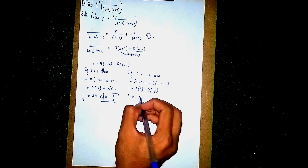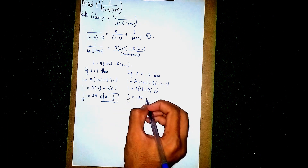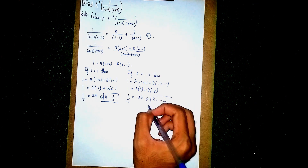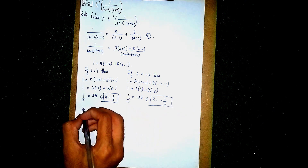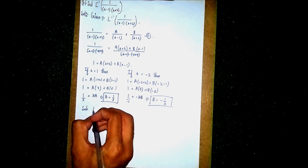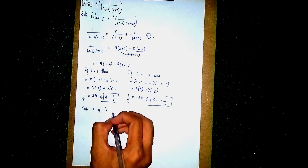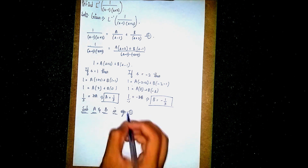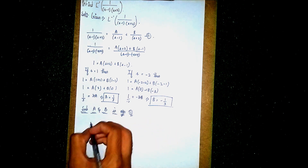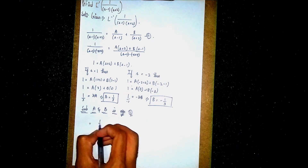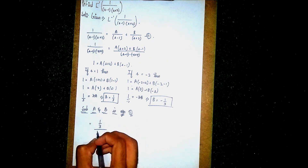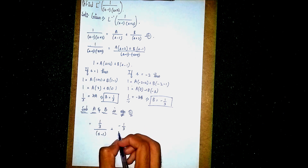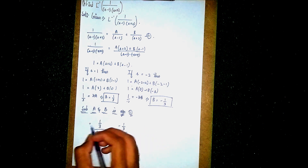This gives 1 equal to minus 3B. Sending minus 3 to the other side, B is equal to minus 1 by 3. Now substitute the values of A and B back into equation 1. The expression becomes (1/3) by (s minus 1) plus (minus 1/3) by (s plus 2).